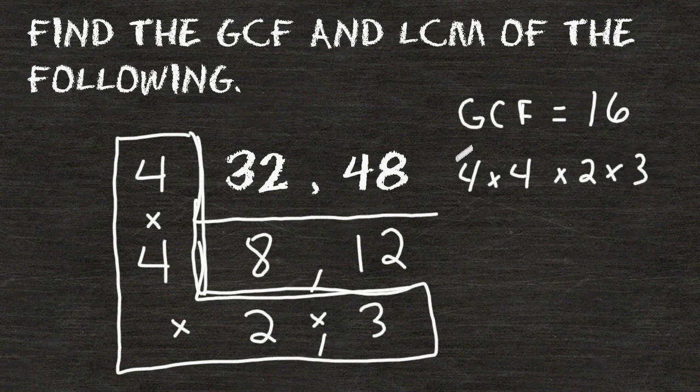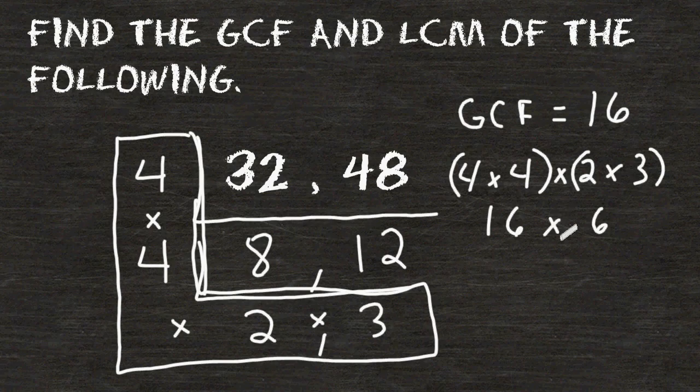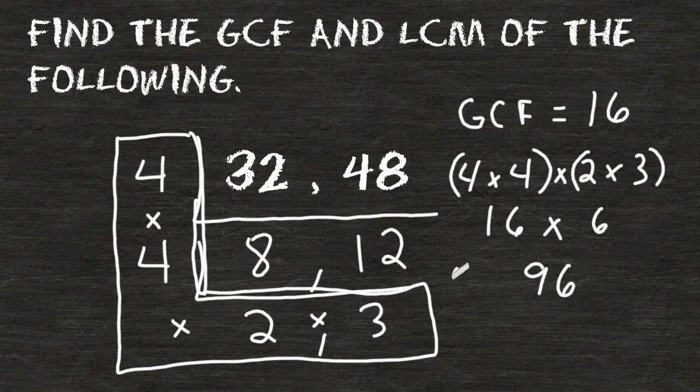For example, I can take 4 times 4, which is 16, and I can take 2 times 3, which is 6, and multiply those products together. And 16 times 6 is equivalent to 96. So the LCM of these two numbers is equal to 96.